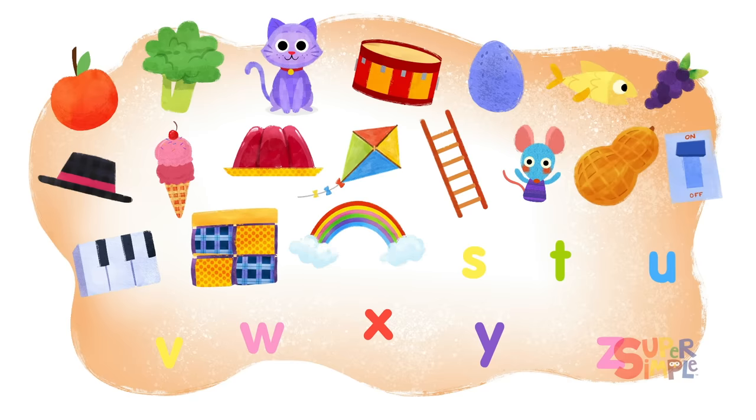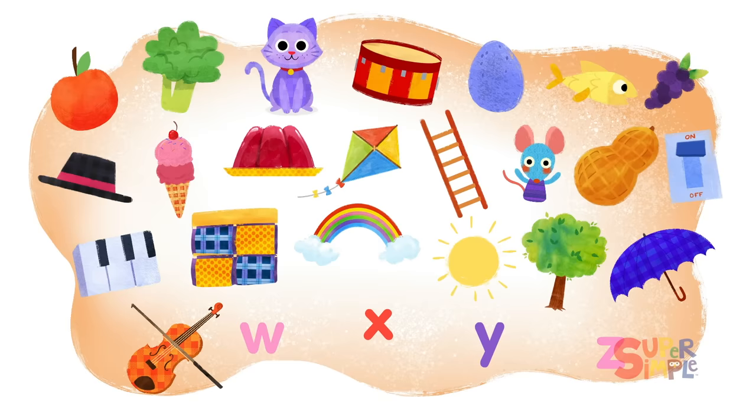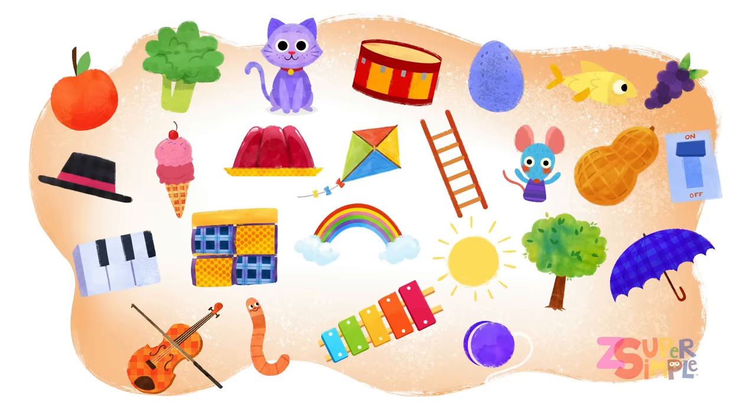Q, Quilt. R, Rainbow. S, Sun. T, Tree. U, Umbrella. V, Violin. W, Worm. X, Xylophone. Y, Yo-yo. Z, Zipper.